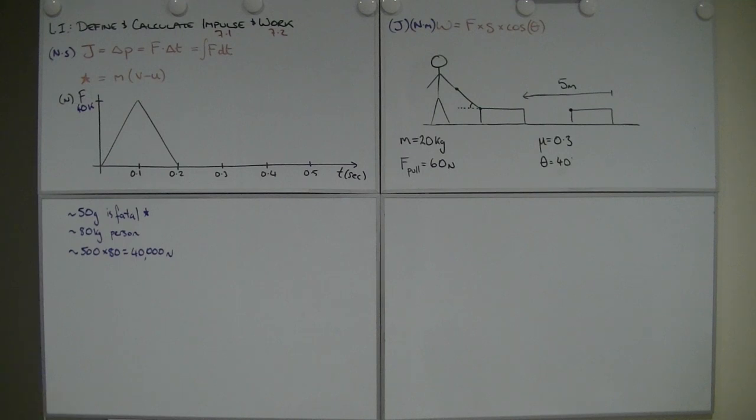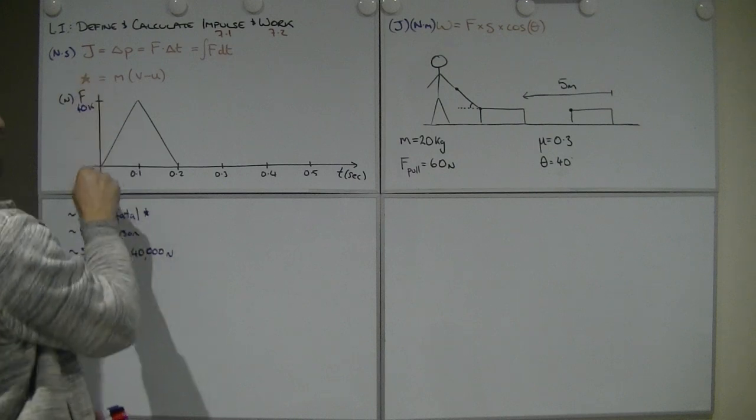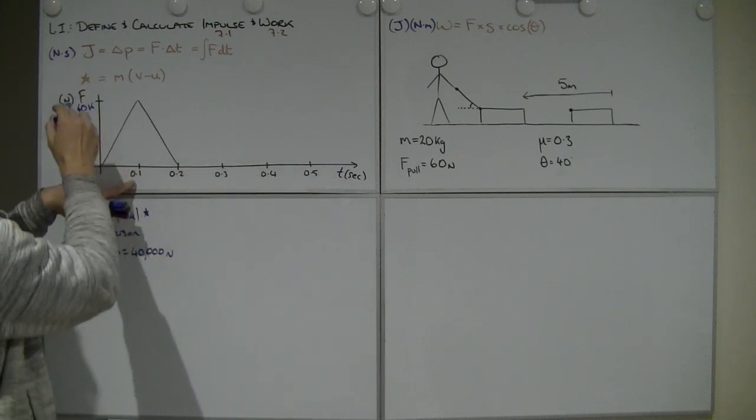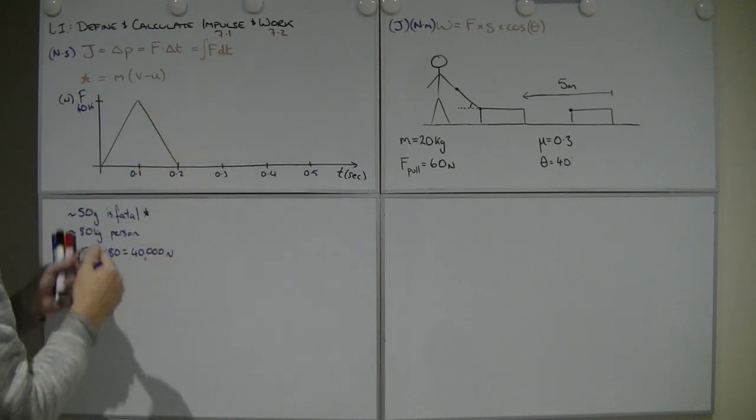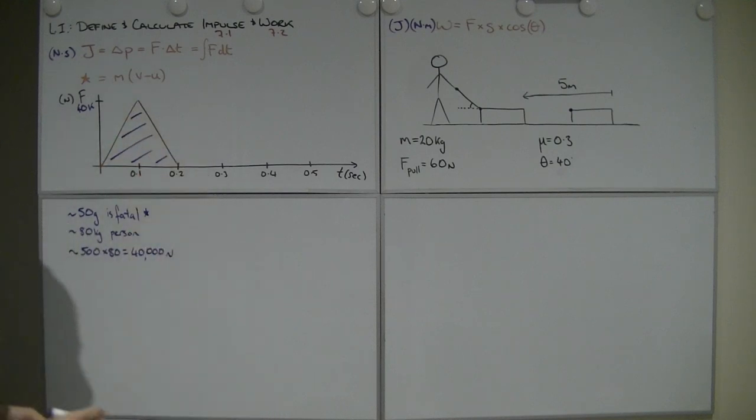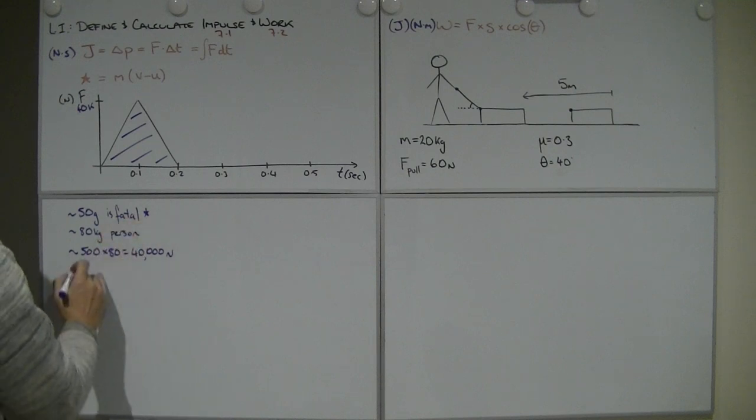What I'd like to know is, what's the impulse that we're suffering here? Impulse is force multiplied by time. Well, I've got my force, I've got my time. It's not a matter of 0.1 times this, because what we really care about is all this area in here. We've got a nice triangle, so you can go half base times height.